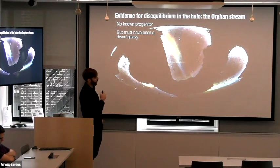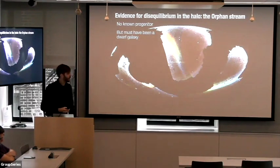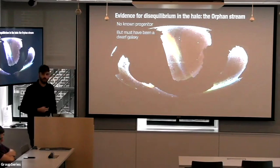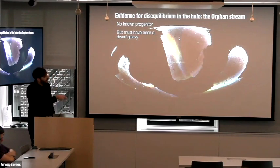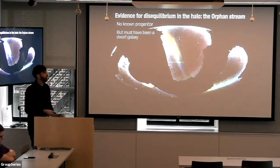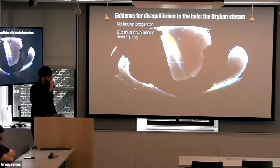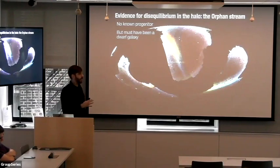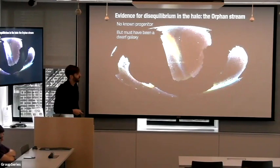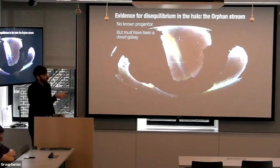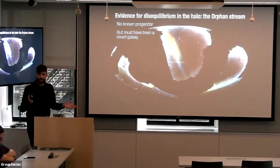I think the strongest case for that comes from the Orphan stream, which was discovered in the Sloan Digital Sky Survey about 15 years ago. We think it's the remnant of a dwarf galaxy where we just see the stream that's left over — it's called Orphan because there's no known progenitor system. It's pretty massive; the original stellar mass of this thing had to be about ten to the seven solar masses or so.